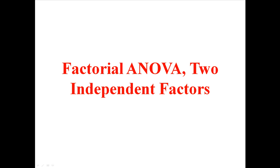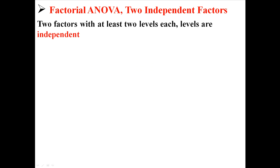So now that we've done a regular ANOVA, we're now going to do a factorial ANOVA with two independent factors. This ANOVA has two factors with at least two levels each, and these levels are independent.